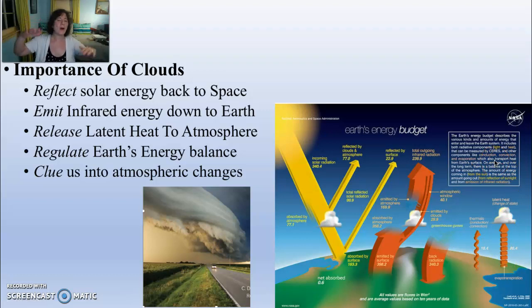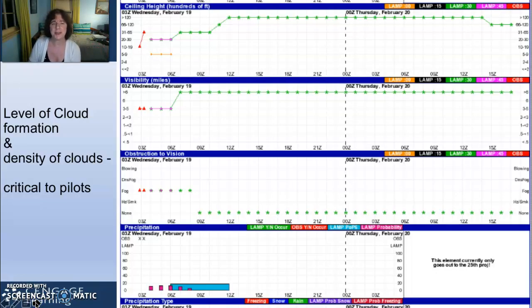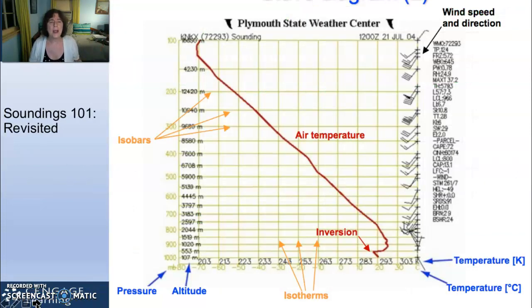This helps to regulate our temperature balance. It gives us a clue to atmospheric changes because we can look at the clouds and know what's coming. A critical note for pilots - we've talked about temperature and dew point. This is the rest of what comes out of Morristown airport every day: ceiling height, visibility, obstruction, division, precipitation. This is all condensation and all cloud development.